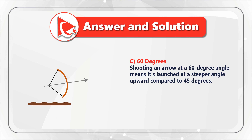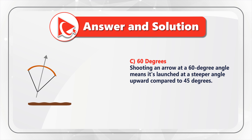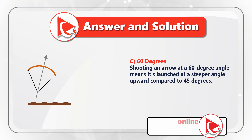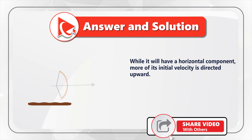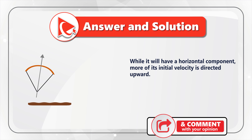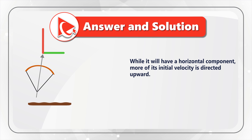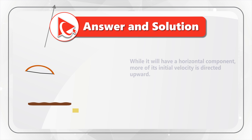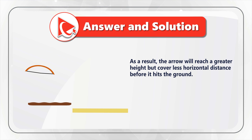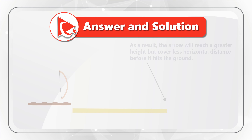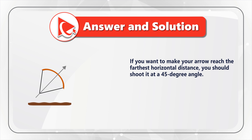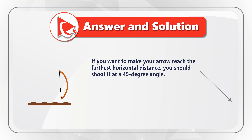Now let's compare it to shooting an arrow at a 60-degree angle. This means we are launching it at a steeper angle upward compared to even the 45-degree angle. While it still has a horizontal component, more of its initial velocity is directed upward. As a result, the arrow will reach a greater height but cover less horizontal distance before it hits the ground. Which brings us to the 45-degree angle solution.